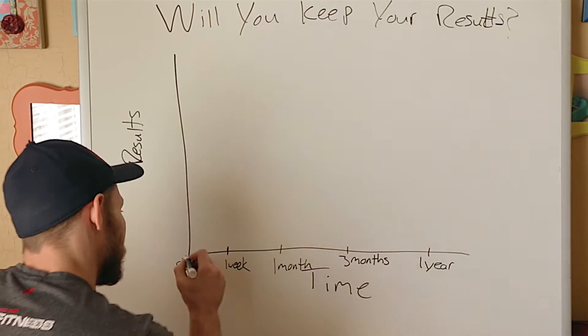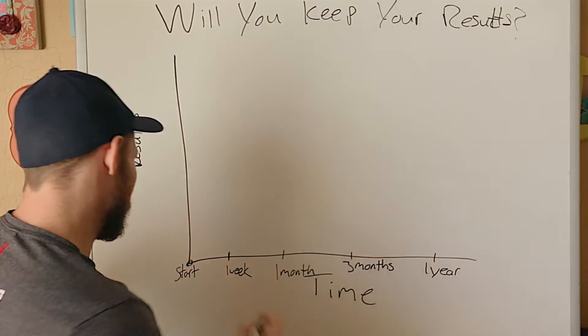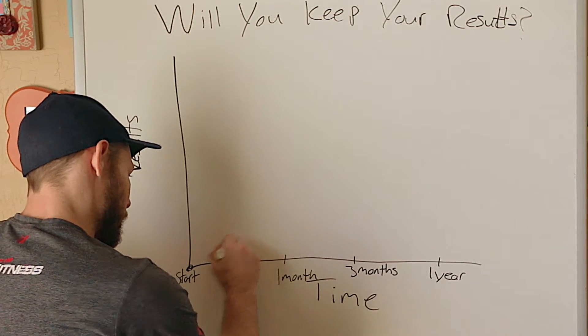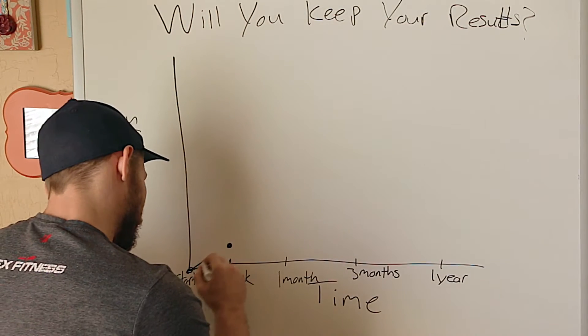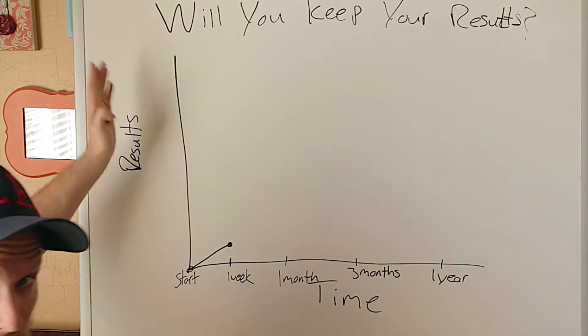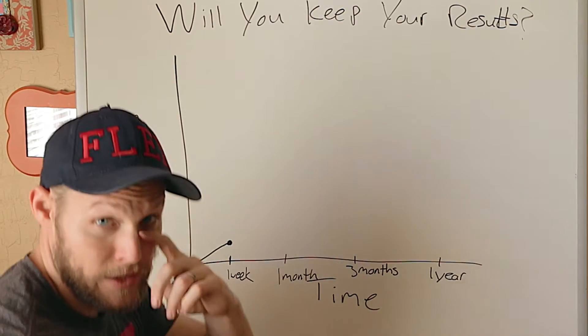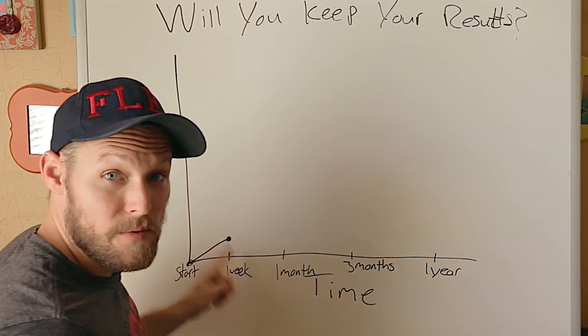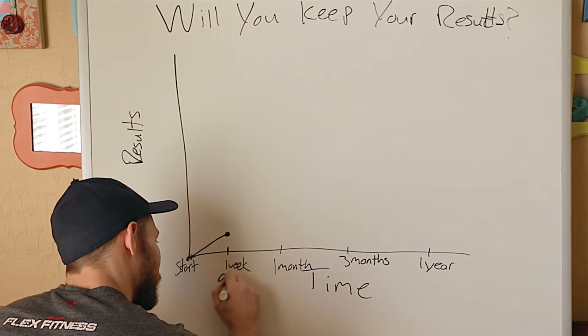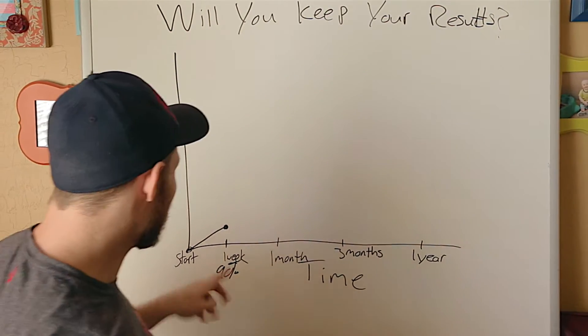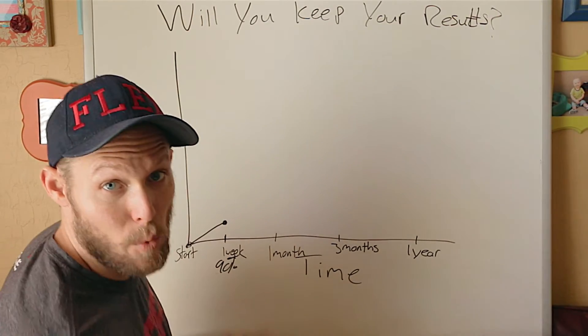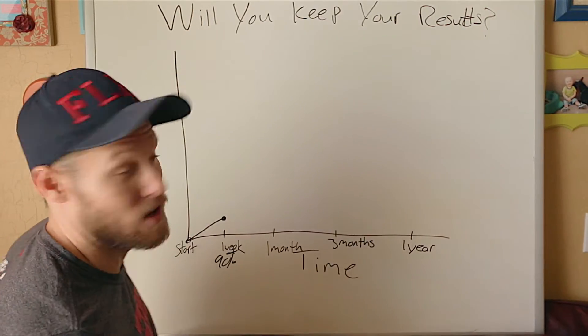And here's how it starts. Everybody starts here. They start at the bottom. Then you go to one week. So you creep up the results and your time increases. This right here, this is where 90% of people fall off. Because you don't get very much results in a week, but everybody wants instantaneous results.